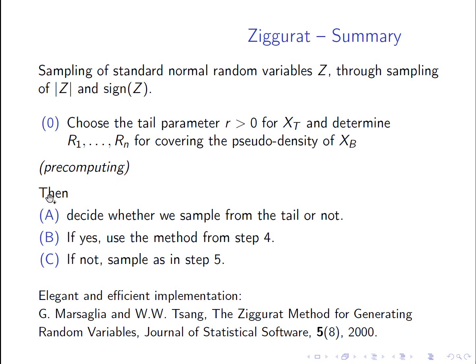And afterwards, after this pre-computing step, we have these three steps. So first, we decide whether we sample from the tail or not. If yes, we use the method from step 4, this accept-rejection method. And if not, we sample as in step 5, where we really exploit the Ziggurat construction. So, and as I said, this method is due to Marsaglia and Tsang. And if you are looking for a really elegant and efficient implementation, you can find this in this reference here.